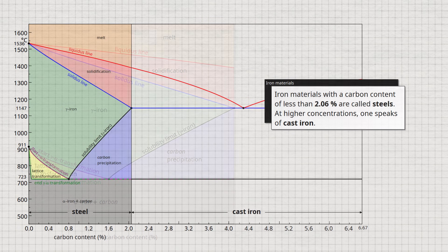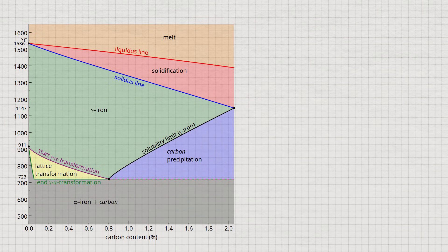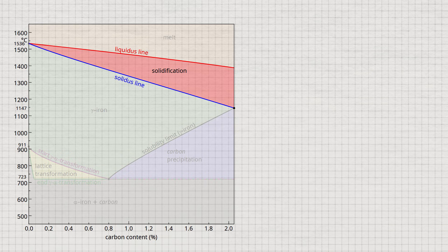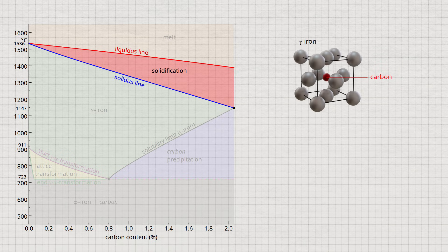Let's take a closer look at the steel part of the phase diagram. This shows the lenticular two-phase region during solidification that is typical of solid-solution alloys. In fact, all steels solidify like a solid-solution alloy in which the alloying element carbon is initially completely soluble in the face-centered cubic lattice of gamma-iron. This complete solubility is the very characteristic of a solid-solution alloy.